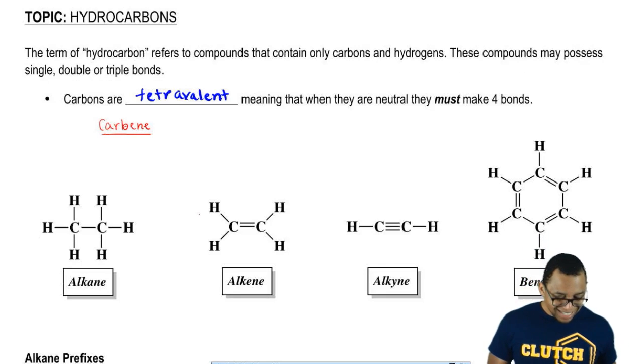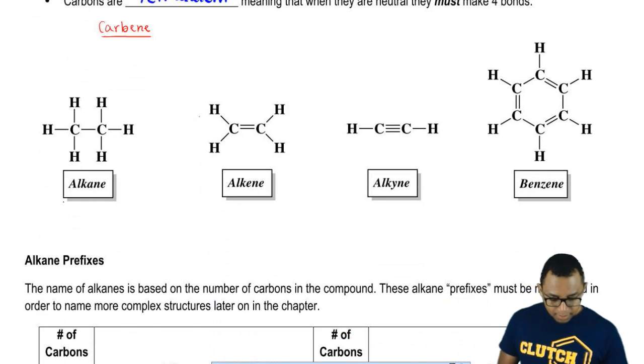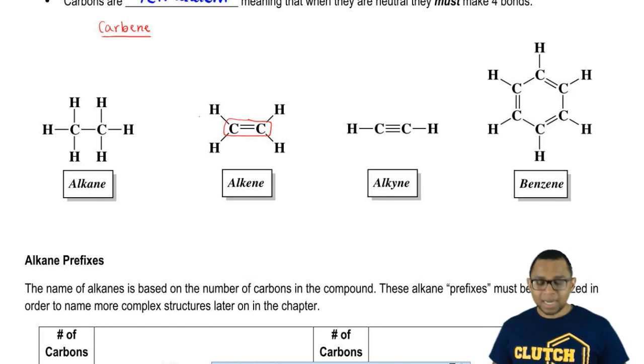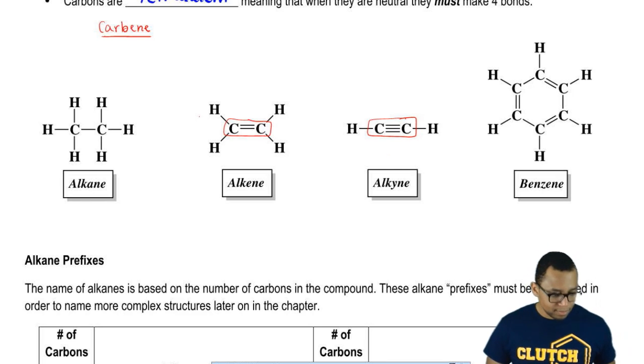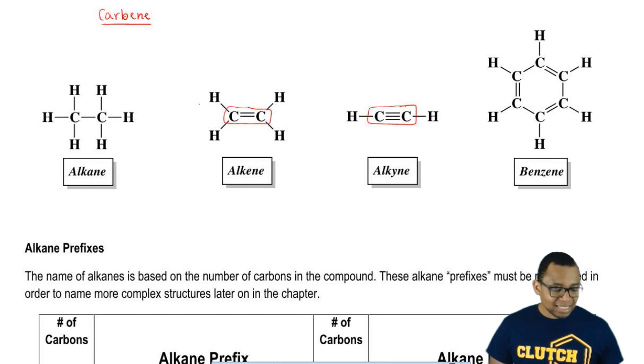Now, alkanes have nothing but single bonds between their carbons and hydrogens. Alkenes have at least one carbon double bonded to another carbon. Alkynes have at least one carbon triple bonded to another carbon. Then benzene is this special ring that we have here. All of these represent different types of hydrocarbons. They only have carbons and hydrogens in them.